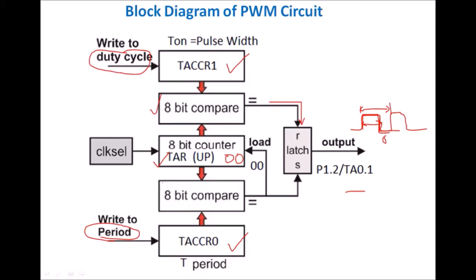Now output is at 0 and the lower comparator starts comparing the count of the TAR register with CCR0. When both counts are equal, it generates a signal given to the set terminal of the latch. At the same time, a signal is given to the TAR register and its count rolls over to 0x00. Since a signal is given to the set terminal, the logic 0 switches to logic 1. So this process generates one cycle of the PWM signal and repeats continuously to produce a continuous PWM signal at the output terminal.